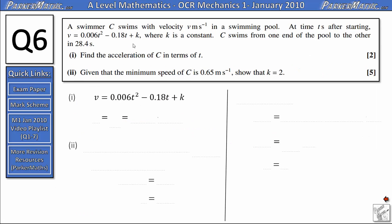A swimmer C swims with velocity v meters per second in a swimming pool. At time t seconds after starting, v equals 0.006t squared minus 0.18t plus k, where k is a constant. C swims from one end of the pool to the other in 28.4 seconds. In part one, we need to find the acceleration of C in terms of t.